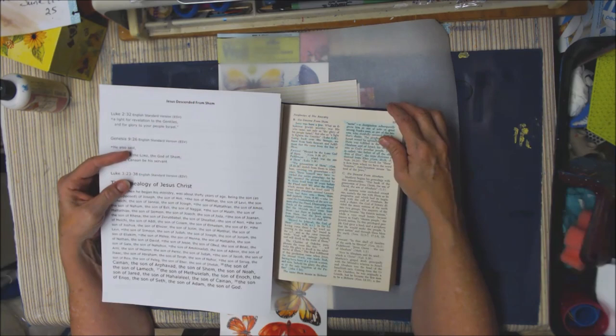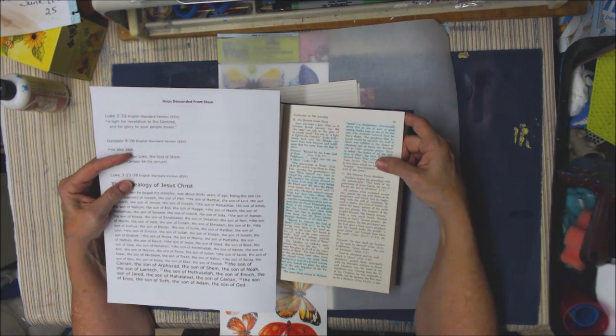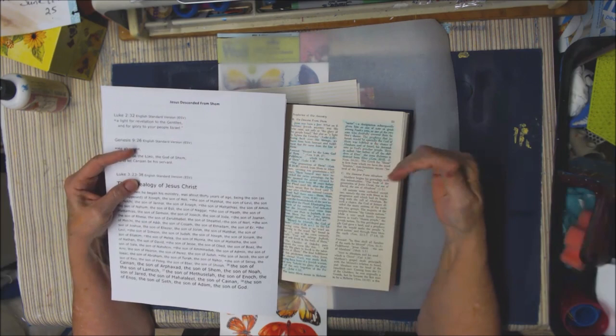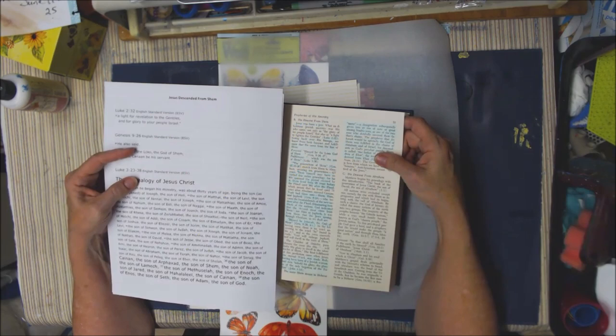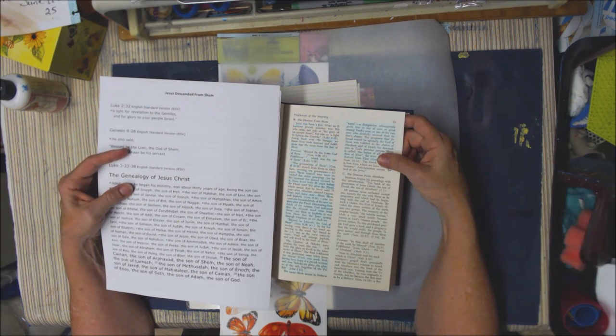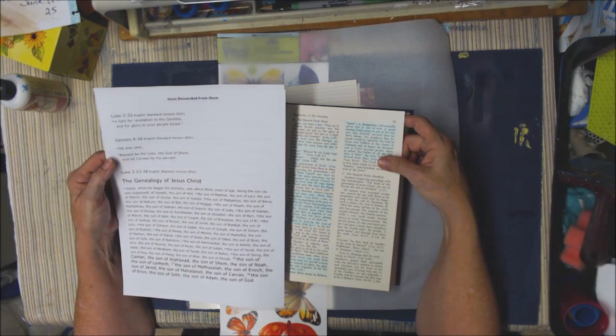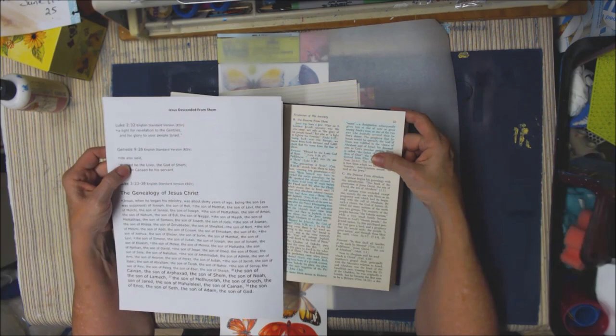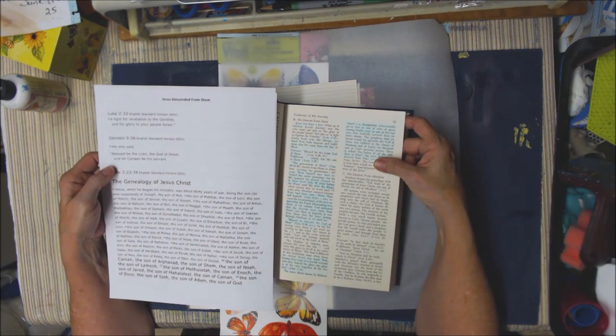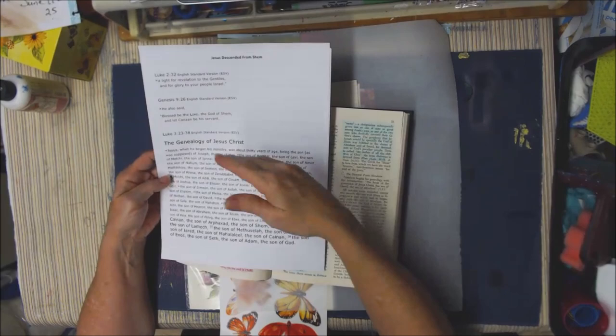Jesus was born a Jew. Luke 2:32 says that he is a light for revelation to the Gentiles and for glory to your people Israel. So Jesus brought glory to Israel and brought light and revelation to the Gentiles. If we go back over his lineage, we know from both forecast and fulfillment that he came from the line of Shem. The forecast was Genesis 9:26, and the fulfillment was in Luke 3:36 where he gives the genealogy of Jesus.